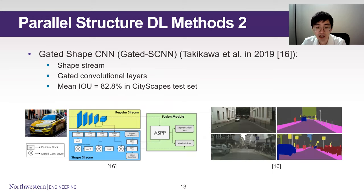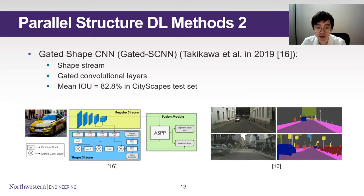Another example is the Gated SCNN proposed by Takikawa et al. in 2019. It divides the network into a regular stream and a shape stream that specifically deals with boundaries. The regular stream is a ResNet with dilated convolution layers. In the shape stream, the authors introduce gated convolutional layers. Each gate uses the high-level feature to control the information passing into the lower-level feature to remove noise and help reinforce boundary information. The outputs of the two streams are then combined together with ASPP. It achieves 82.8% on the Cityscapes test set.